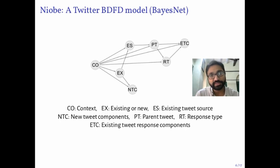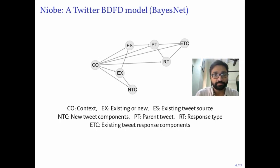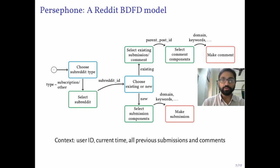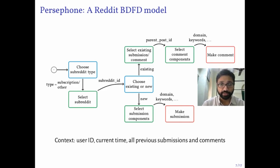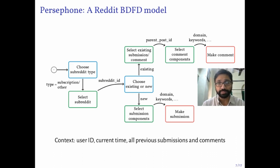This slide shows the Bayesian network version of the flowchart model we just saw, included for completeness. BDFD is a simple and versatile approach for building models. Here we see a BDFD model for the social curation website Reddit, which we call Persephone. It operates similarly to the Twitter BDFD model NIOVI described earlier; however, due to structural differences in the platforms, the decisions are different. We are also working on a similar model for the social coding platform GitHub.